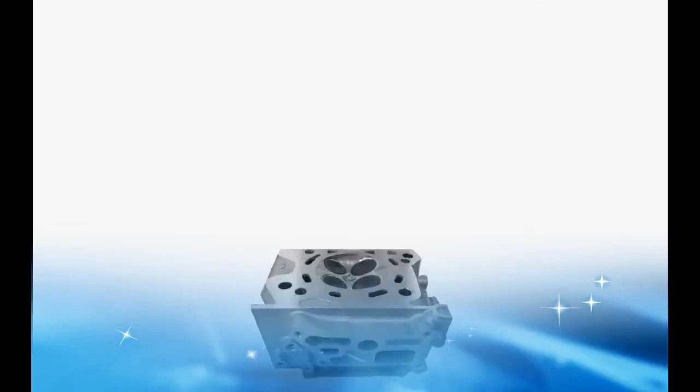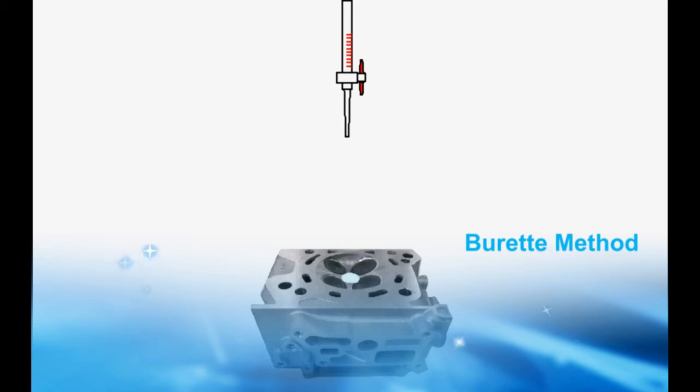The conventional method of measuring engine capacity involves pouring liquid into a cavity, removing it, and then measuring the amount of liquid. This is known as the Burette method.